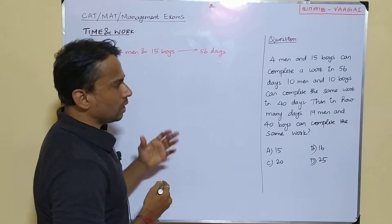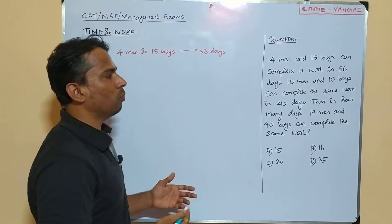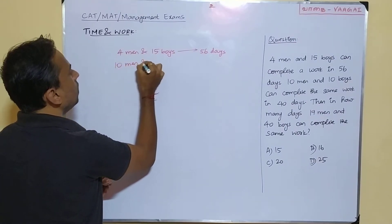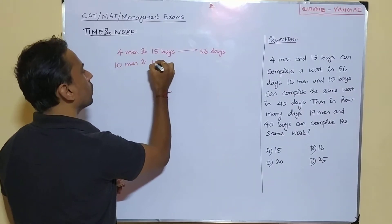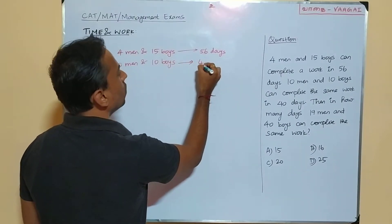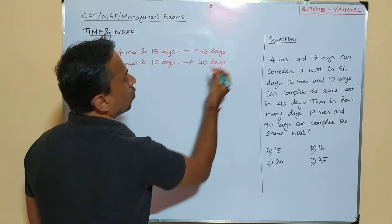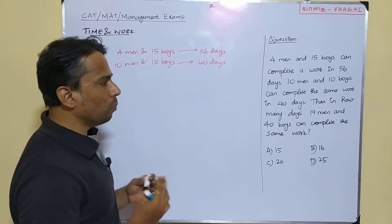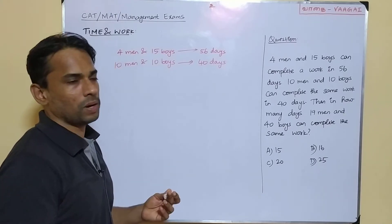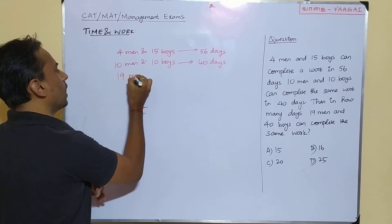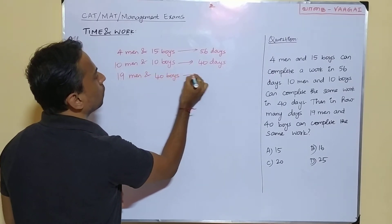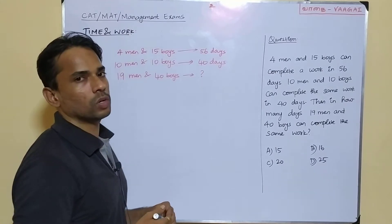Next, 10 men and 10 boys can complete the same work in 40 days. We note that also: 10 men and 10 boys completing the same work in 40 days. The question then asks: in how many days can 19 men and 40 boys complete the same task?